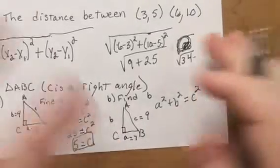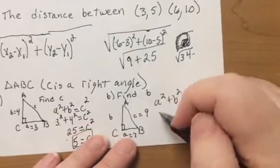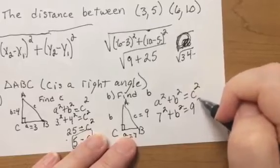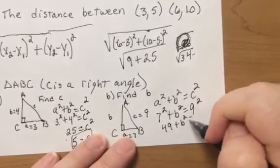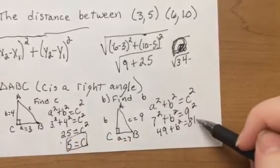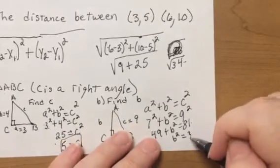Excuse me. So, earthquake, earthquake. So, let's see, we got 7 squared plus b squared equals 9 squared. So, 49 plus b squared equals 81. Then, 49, 81 minus the 49 to get the b squared by itself would be 32.